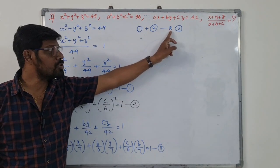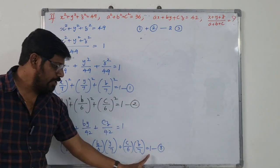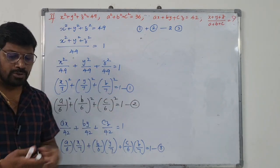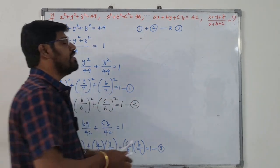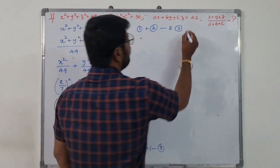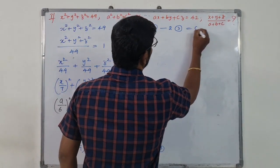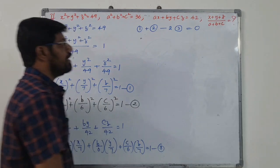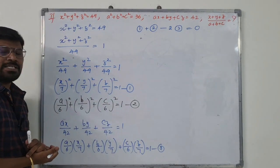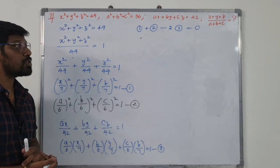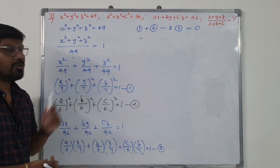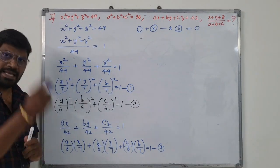Now we combine: equation 1 plus equation 2 minus 2 times equation 3, which equals 0.